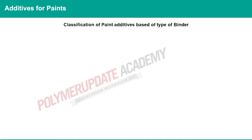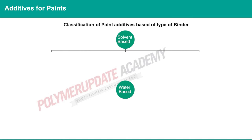Additives include wetting and dispersing agents, dryers, plasticizers, UV stabilizers, rheology modifiers, preservatives, and others. This slide shows the classification of paint additives based on type of binder. There are two types of additives: solvent-based additives and water-based additives. Additives used for solvent-based paints and water-based paints are different. For solvent-based paint, there are three types of additives.